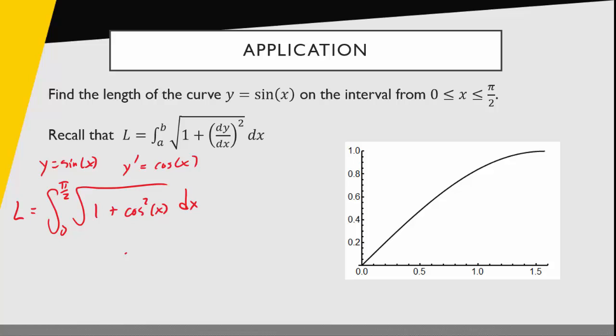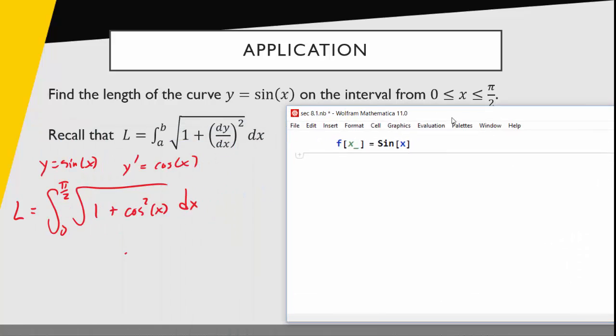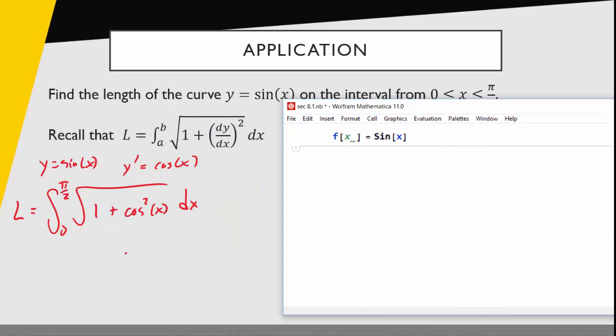Now, of course, the question is how do we evaluate this integral? And most of the time, these integrals are going to come out to be very challenging. So it's okay for us to use another tool, another resource, to help us evaluate it. So here I have Mathematica open, and I'm just going to type in this problem. So I'm going to look at the square root of 1 plus cosine of x, and then we want to square that cosine. And now we could integrate this if we wanted, we could integrate this integrand from x equals 0 to pi over 2.